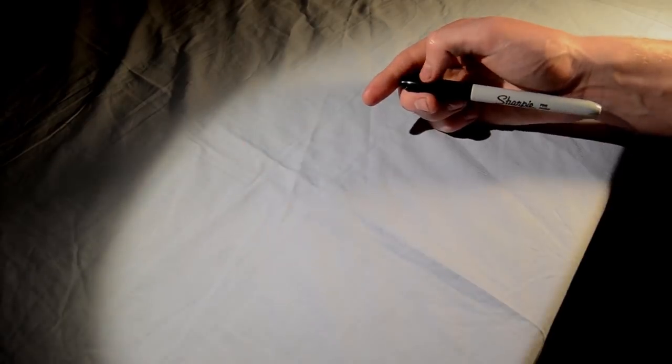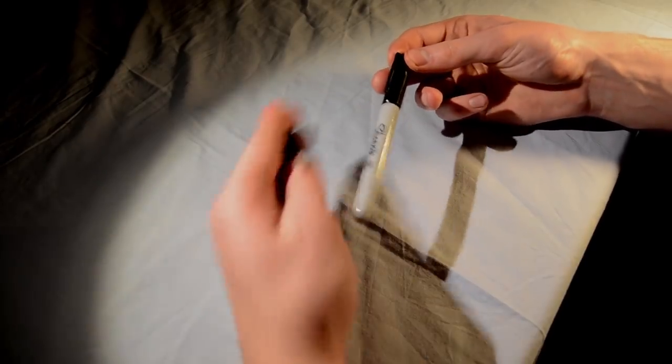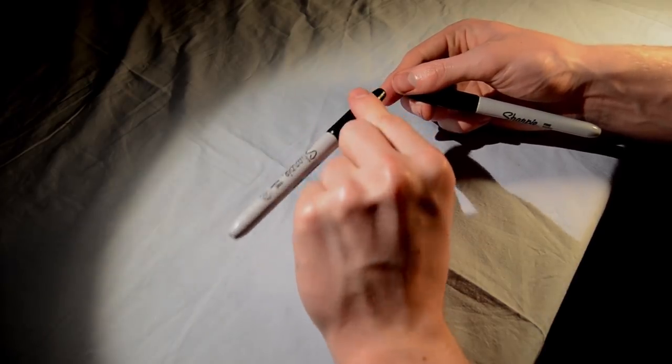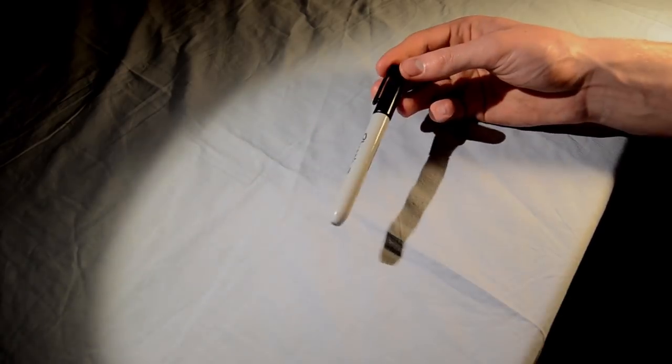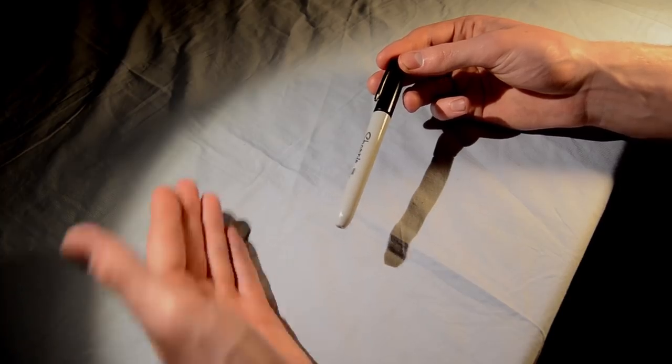Now produce the first pen and pretend to put it in your pocket when in reality it's still clipped to your thumb. Keep repeating this move and it will look like you're producing pens at your fingertips.